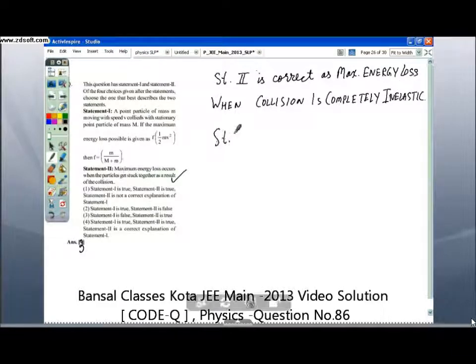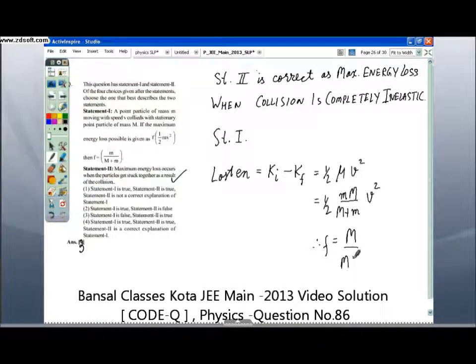Talking about statement 1, the lost energy is equal to K initial minus K final, which is equal to half mu v squared, equals to half m total of m plus M squared. Therefore, f is equal to capital M of m plus M, and the answer is correct.